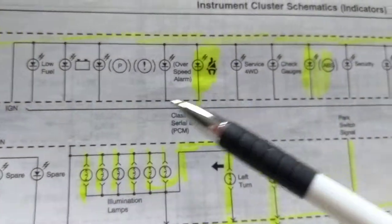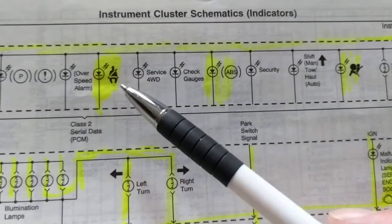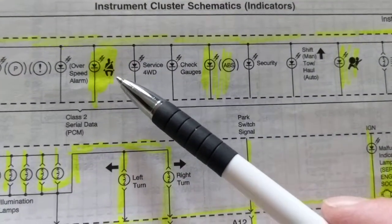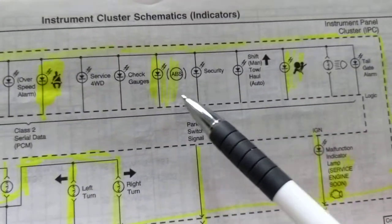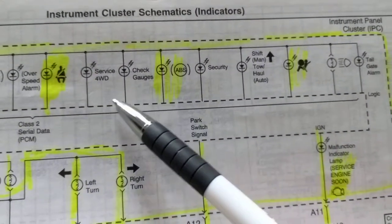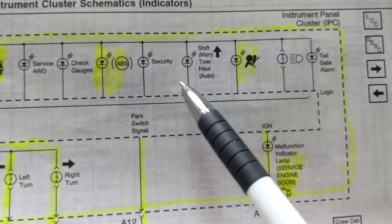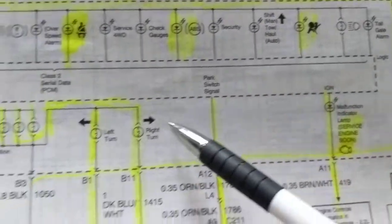Let's say the battery, low fuel, the parking brake, over speed alarm, safety belt, ABS, check gauges, if you're in four-wheel drive. All these things represent airbag or high beam. All these represent different things, the right turn, left turn.